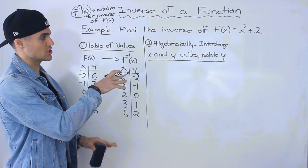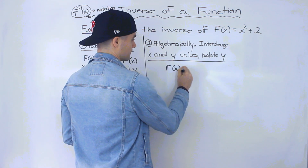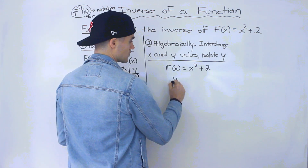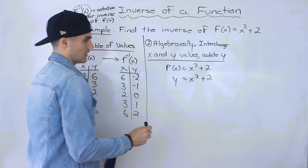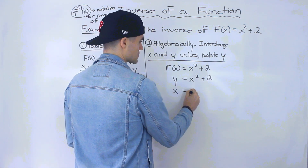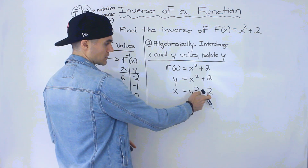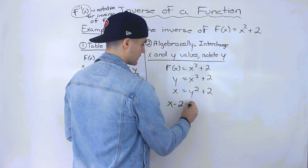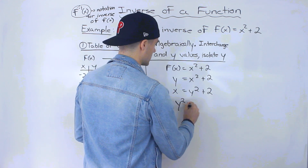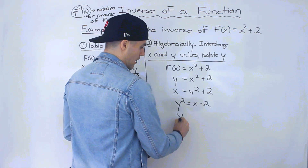The second way you can do this is algebraically. You interchange the x and y values and then isolate for y. If I rewrite the function — remember f(x) is just notation for y — so y equals x squared plus two. We interchange x and y to get x equals y squared plus two, then isolate for y: bring the plus two over to get x minus two equals y squared, or y squared equals x minus two.